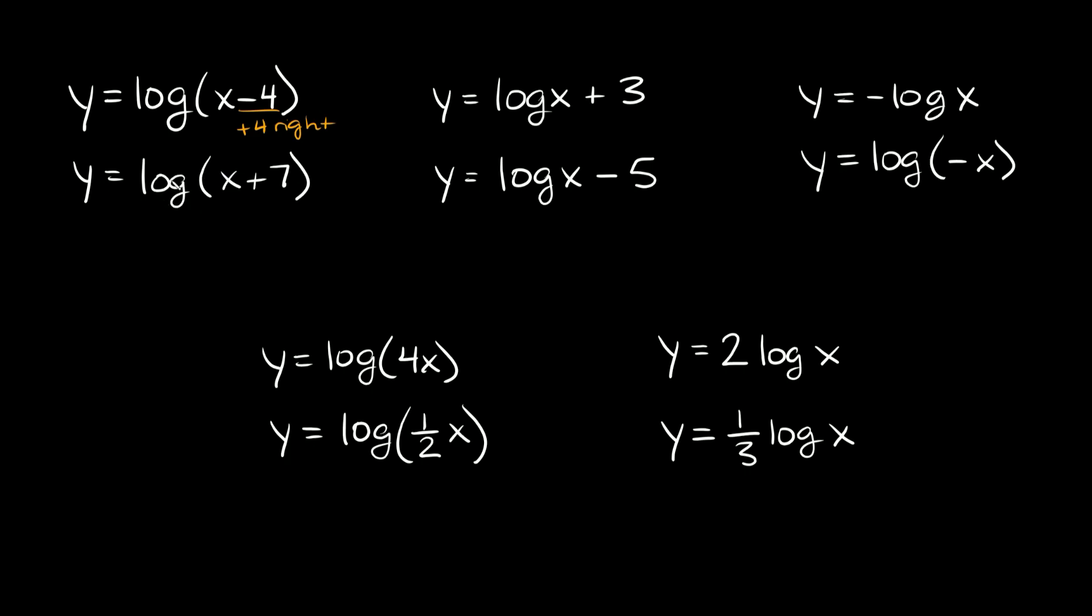And then here we have log of (x plus 7), so in this case we would shift the graph negative 7 spaces, or in other words, 7 spaces to the left.